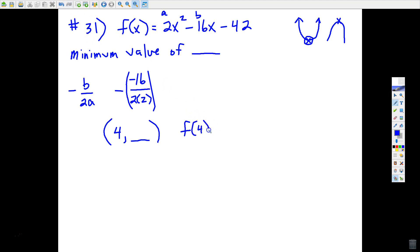Let's see what f of 4 is: 2 times 4 squared minus 16 times 4 minus 42. I think we can do this mentally. 4 squared is 16, 16 times 2 is 32.